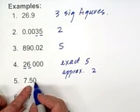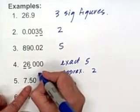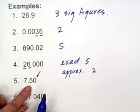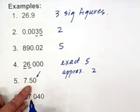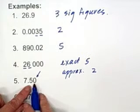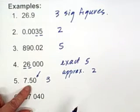7.50. Any zero on the right or after the decimal is counted. So we must count that zero, because that tells us that whoever made this measurement measured to that degree of accuracy. So here we have three significant figures.